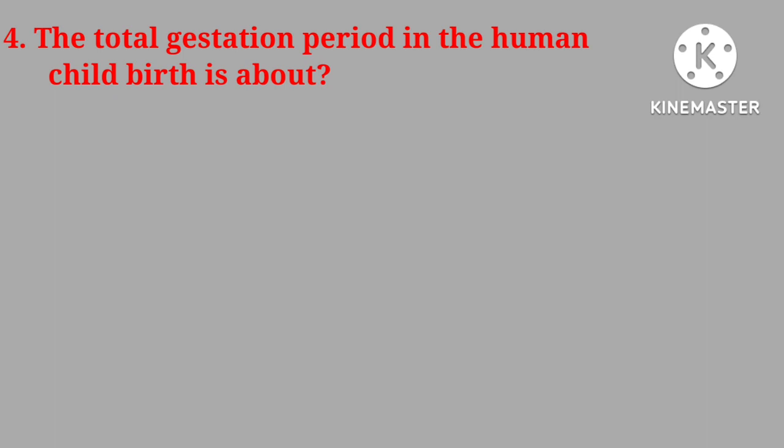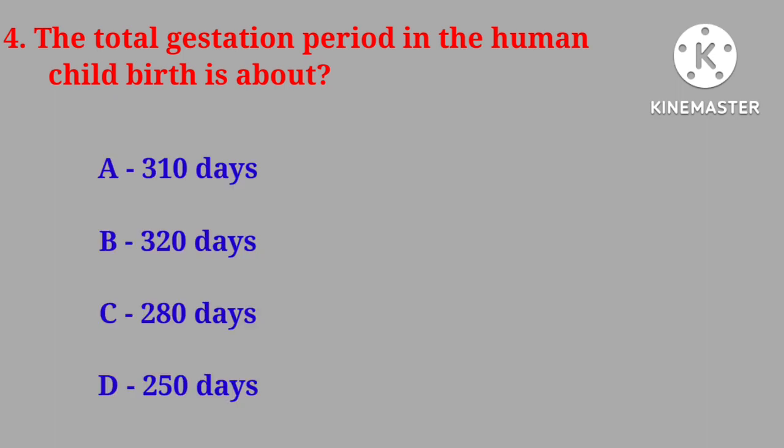Question No. 4: The total gestation period in human childbirth is about: 310, 320, 280, or 250 days. Correct answer is 280 days.